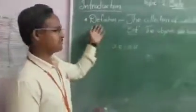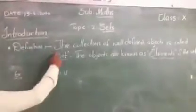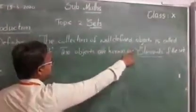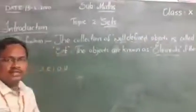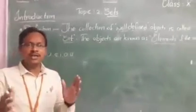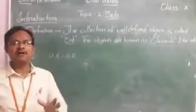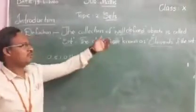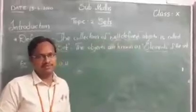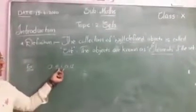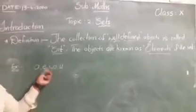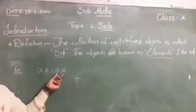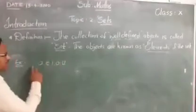The definition of set: the collection of well-defined objects is called a set. What is meant by well-defined? Well-defined means the objects should have a common property among all the objects — such a property we call well-defined. For example, here I took A, E, I, O, U. These objects have a common property: they are the vowels of the alphabet.